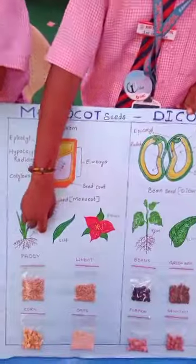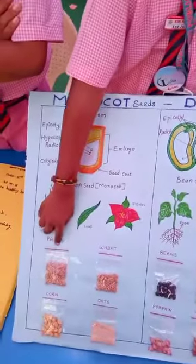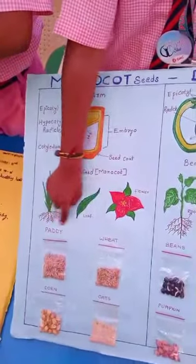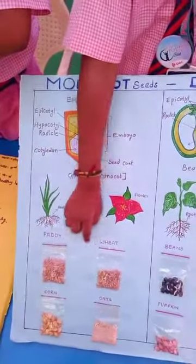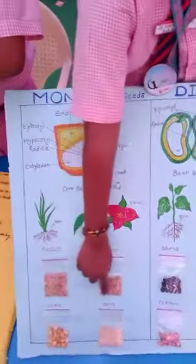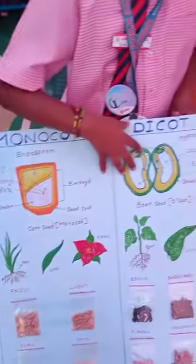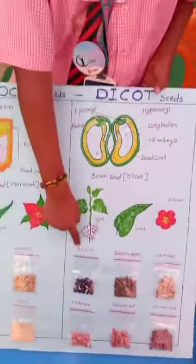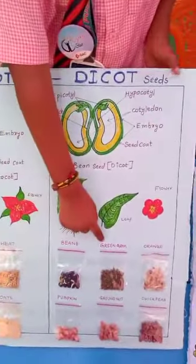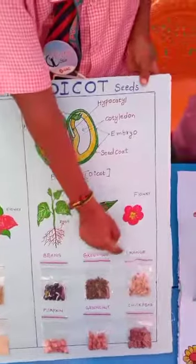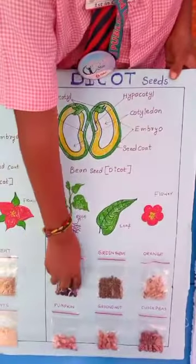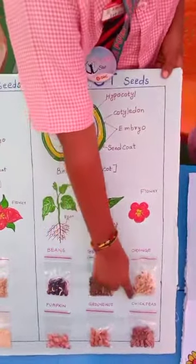Examples of Monocot seeds include corn, paddy, and oats. Examples of Dicot seeds include green gram, orange, pumpkin, groundnut, and chickpeas.